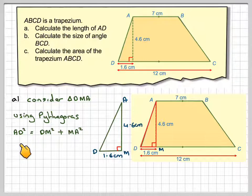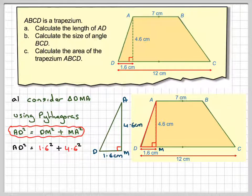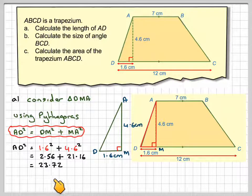Pythagoras' theorem says that AD squared is equal to DM squared plus MA squared. So AD squared is going to be equal to 1.6 squared plus 4.6 squared, which is equal to 2.56, 21.16. Added together, that gives me 23.72.